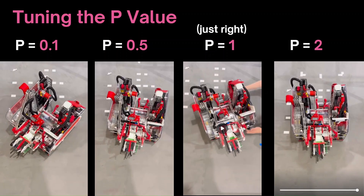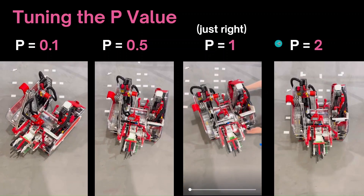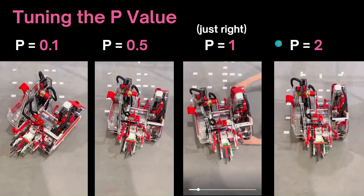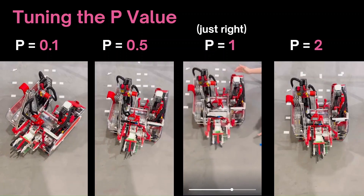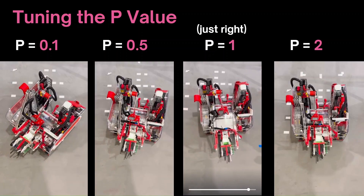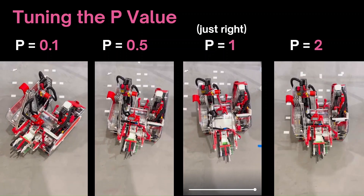So after adjusting the P-value a couple of times, we can find a sweet spot such that the robot can turn back with minimal overshoot and can correct back pretty quickly and accurately. Just as with the translational PIDF, these values can vary from robot to robot, so don't be afraid to try out different values and see what works best for you.